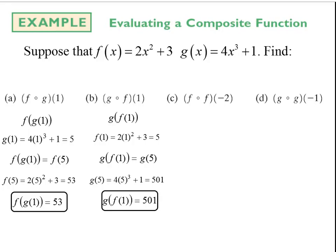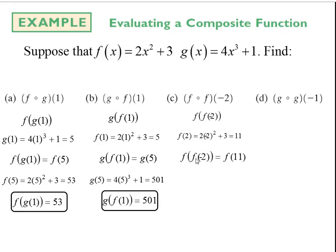Continuing to work on this skill: letter C says we're going to find f composed with f at negative 2. The first f will operate on negative 2 — I plug negative 2 into the f function and get 11. That should be f at negative 2: 2 times negative 2 squared plus 3, which is 11. Now I take 11 and plug it into the outer f function. f at 11 gives me 245.